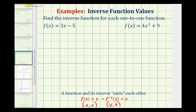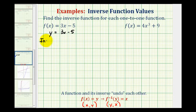The first step is to replace f of x with y. So we have y equals three x minus five. Then to determine the inverse function we interchange the x and y variables. So the inverse function would be x equals three y minus five.